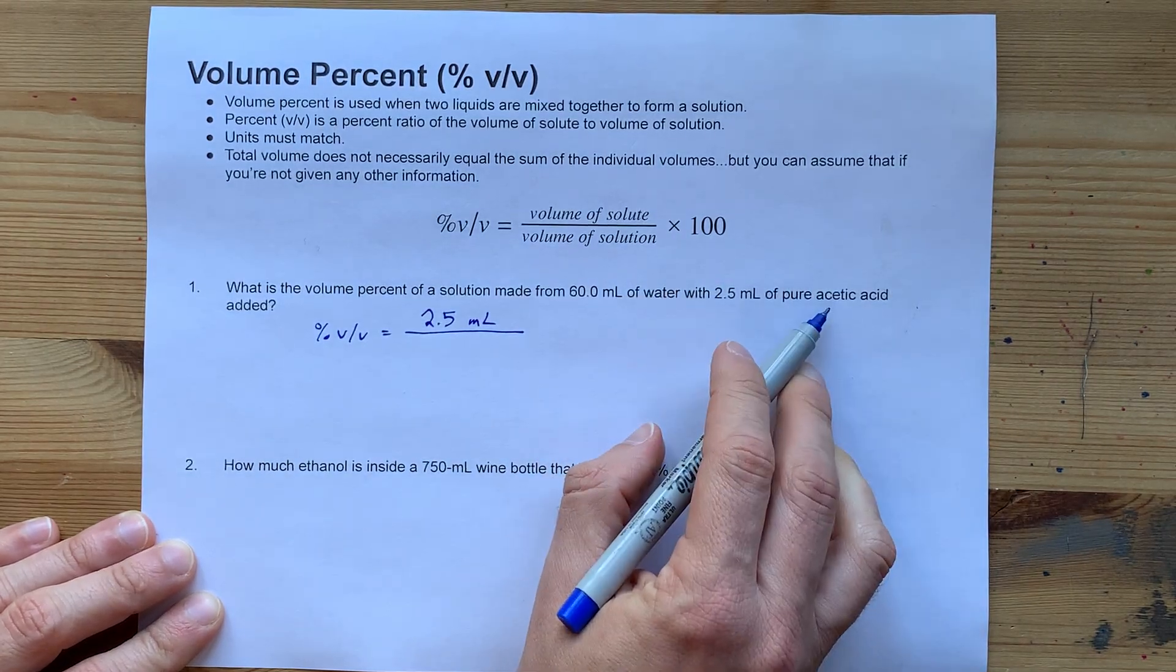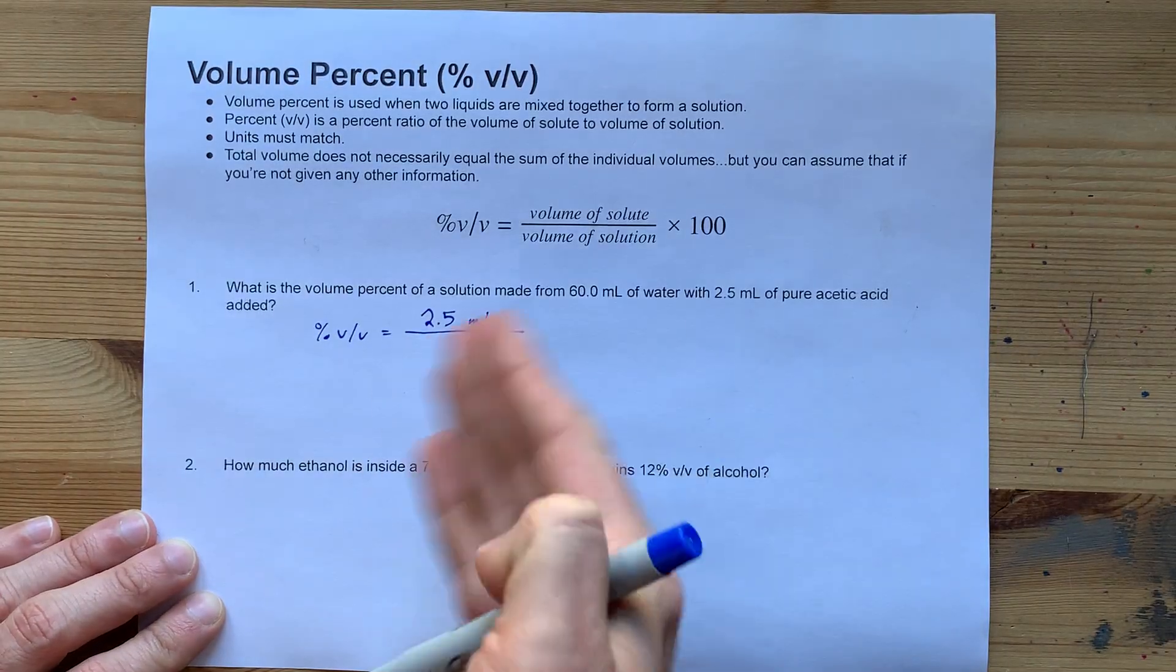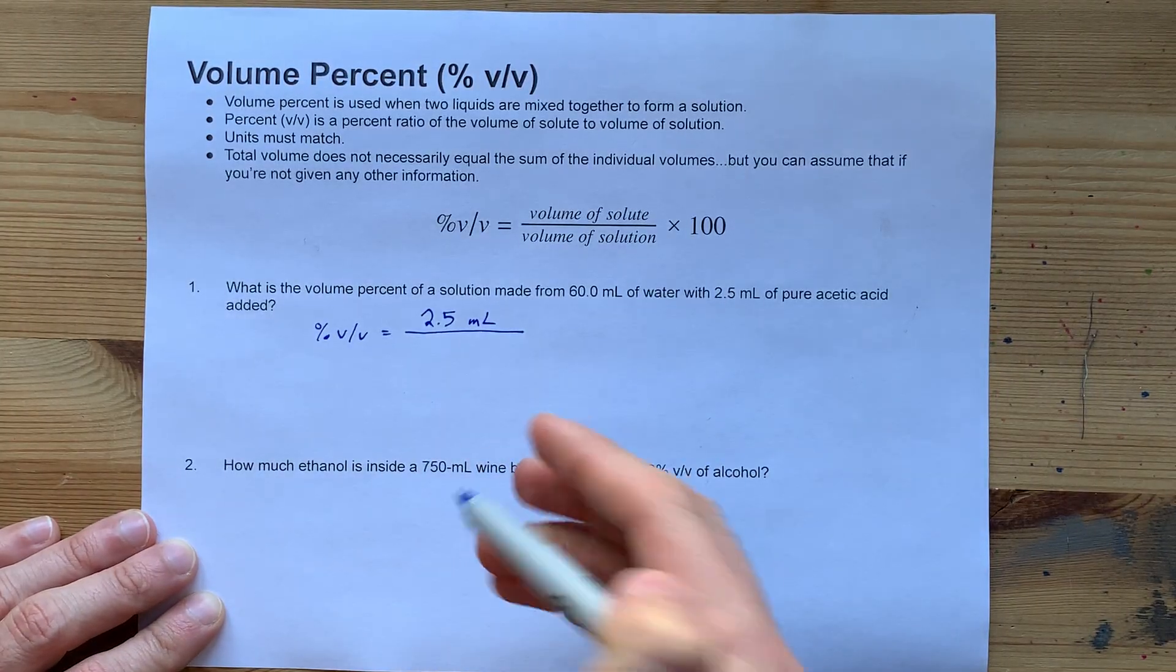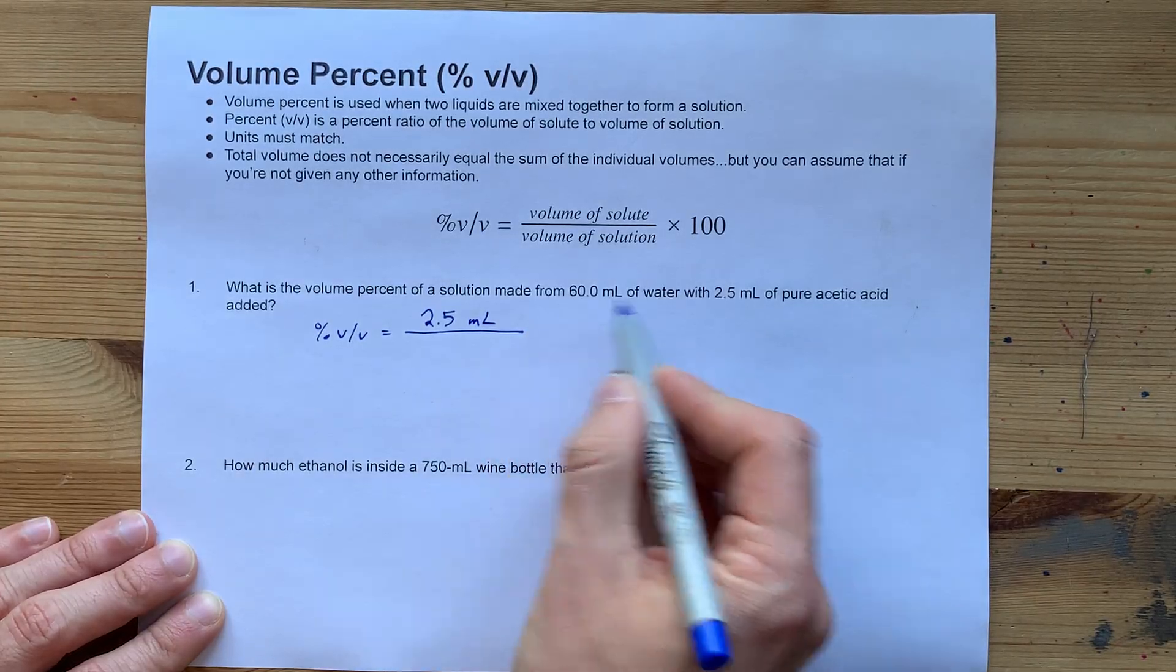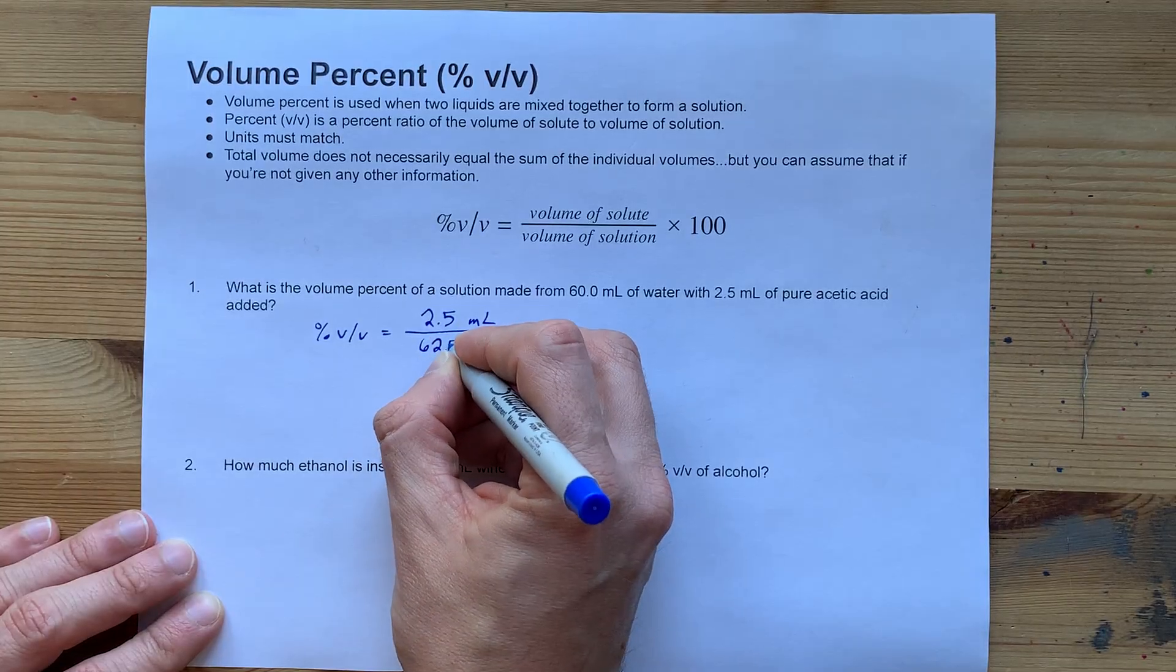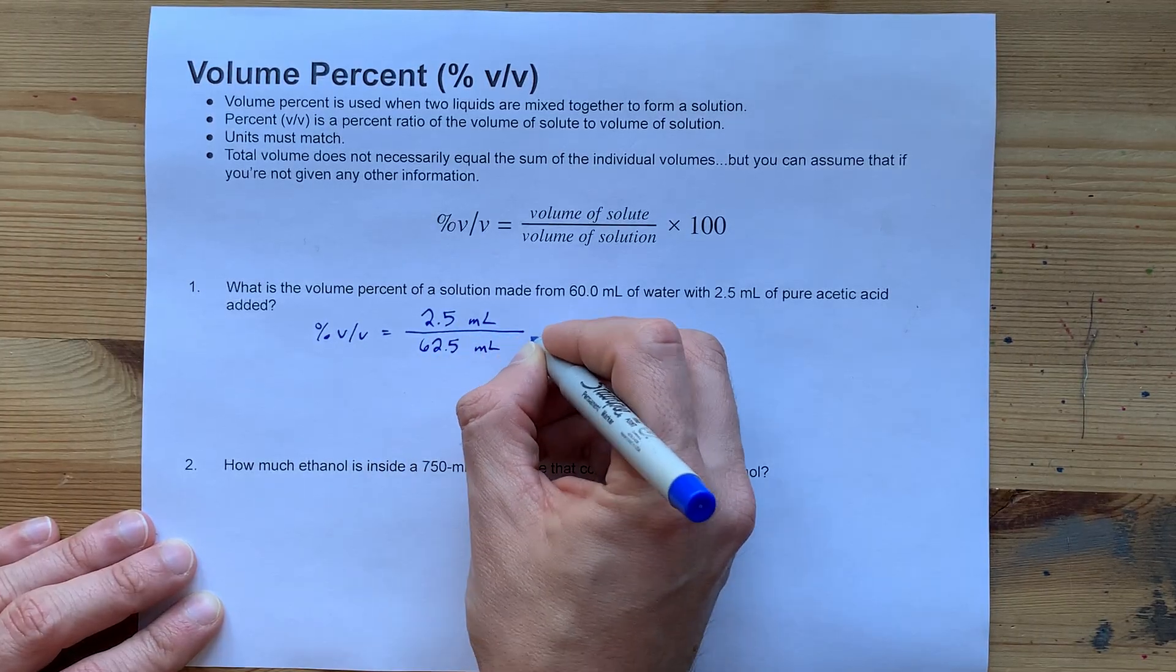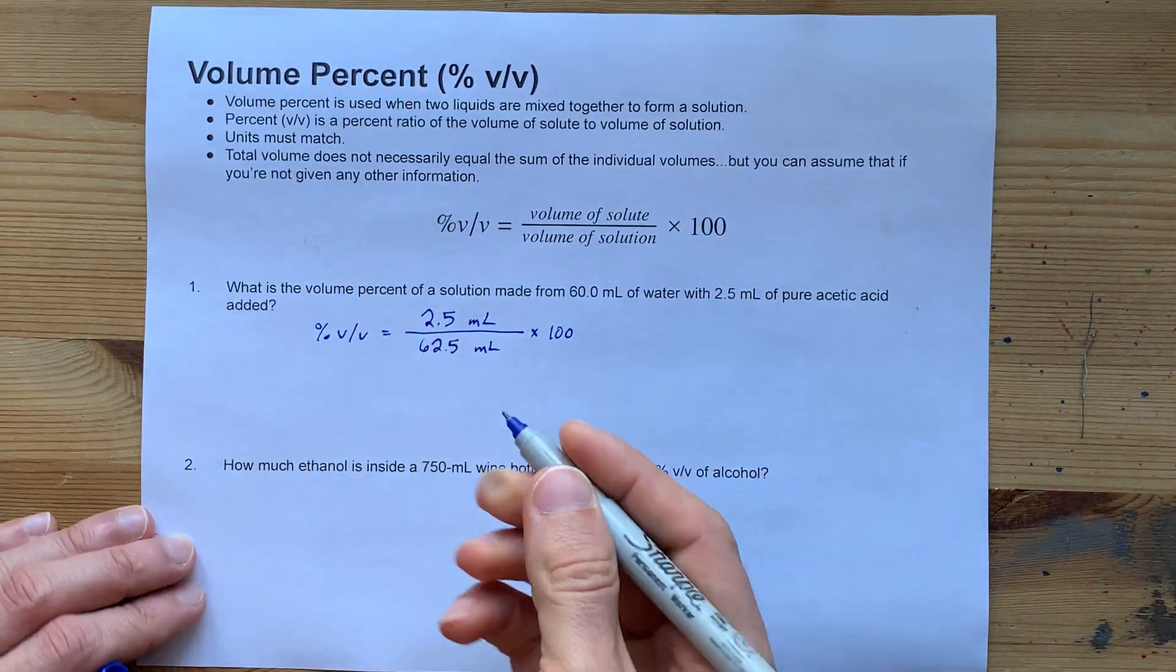Divided by the volume of the solution. Now, they're giving us the volume of the acetic acid and the water separately. There's no indication that there is a change in volume. So, we can assume that the total solution is the sum of those two. That makes the total solution 62.5 milliliters. And don't forget to times by 100, because you need your answer in percent.